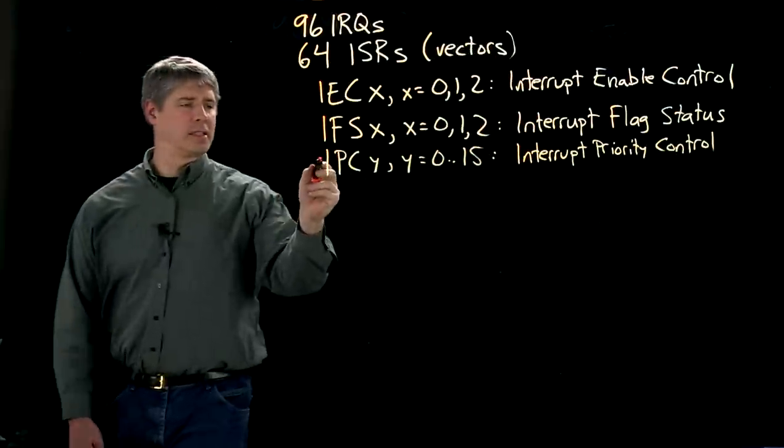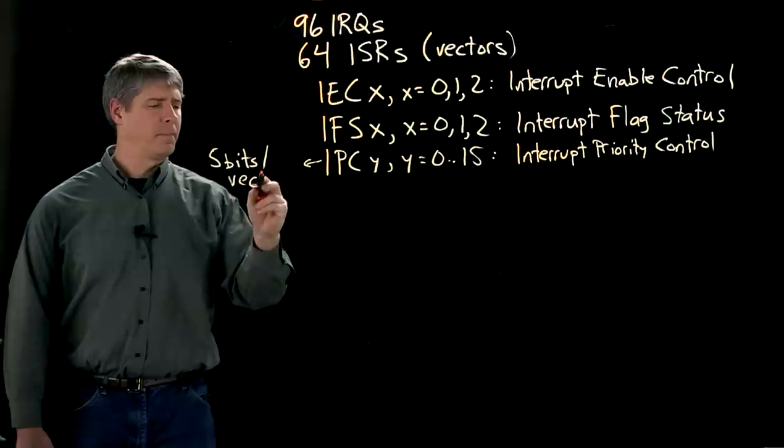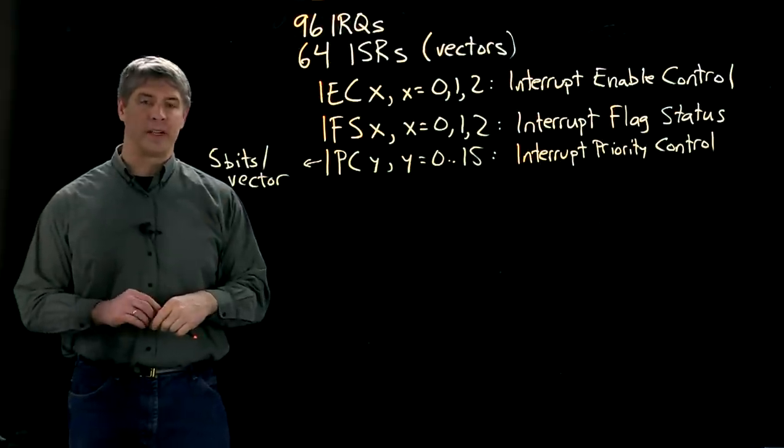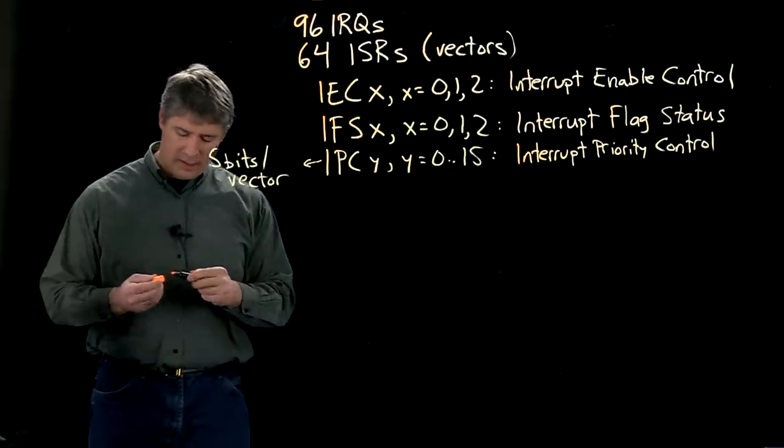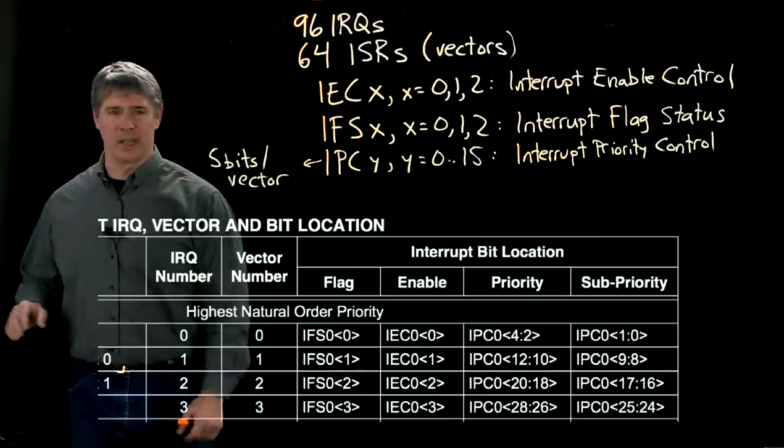And as I mentioned, this has five bits per vector. And those bits are separated into priority and sub-priority for each interrupt service routine, each vector. So let's take a look at that.